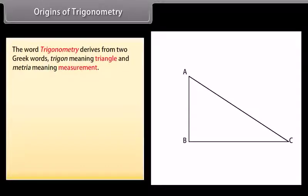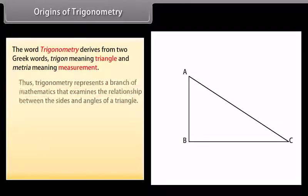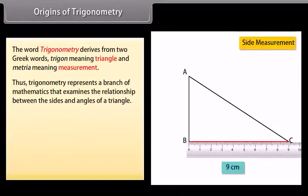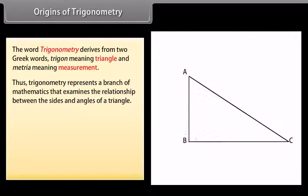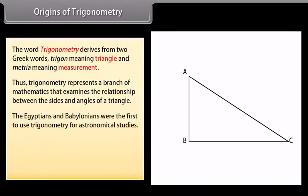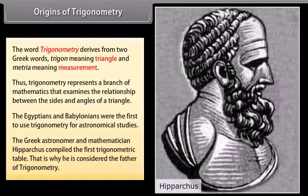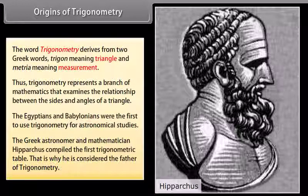Origins of trigonometry: The word trigonometry derives from two Greek words — trigon meaning triangle and metria meaning measurement. Thus, trigonometry represents a branch of mathematics that examines the relationship between the sides and angles of a triangle. The Egyptians and Babylonians were the first to use trigonometry for astronomical studies. The Greek astronomer and mathematician Hipparchus compiled the first trigonometric table, and that is why he is considered the father of trigonometry.